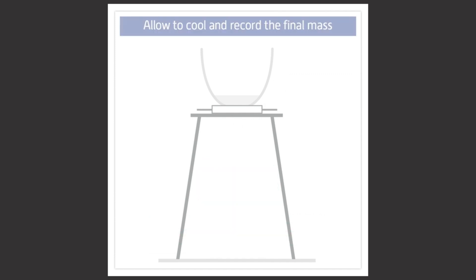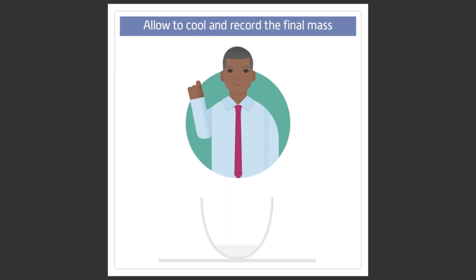Allow the equipment to fully cool and then record the final mass of the crucible. To speed up the cooling of the crucible, you can use tongs to carefully remove it from the tripod and place it on a heat proof mat. However, you should always listen to your teacher first, as they may prefer you to wait for it to cool before you handle it.